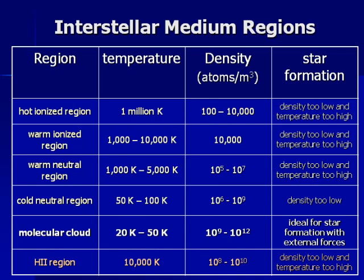Looking at the different parts of the interstellar medium: the hot low-density regions are not going to form stars. We won't get star formation at the hot ionized region, the warm ionized region, the warm neutral region, or even the cold neutral regions. The only place we're going to get star formation is in these molecular clouds. Once the massive stars start forming, they blow the molecular cloud apart, and the H2 regions become too hot and too low in density for new stars to form. Basically, star formation happens only where the gas is cold and very dense.